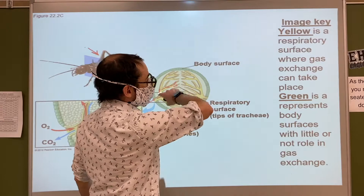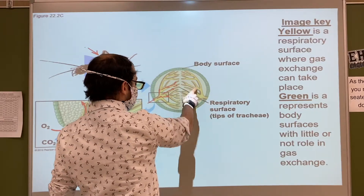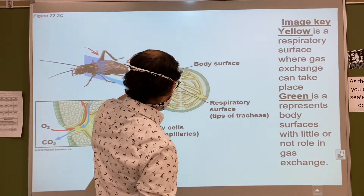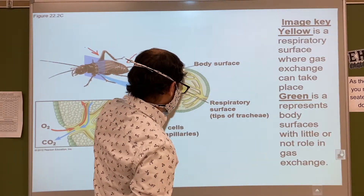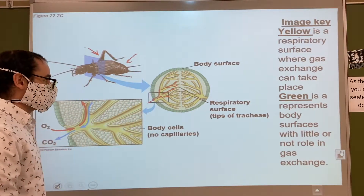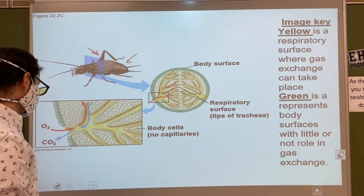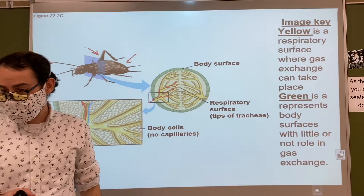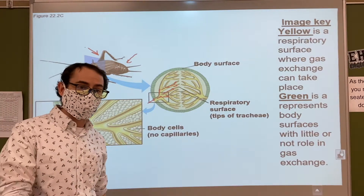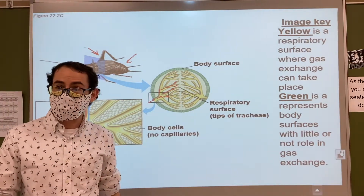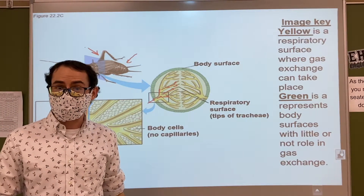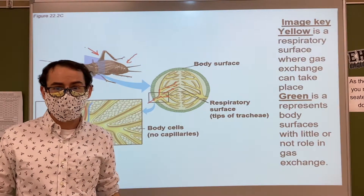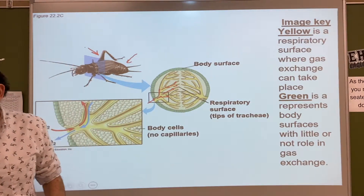So the yellow is the respiratory surface, and the green represents the exoskeleton where there's not much gas exchange happening. They're not going to have blood in the same way that we think of blood for us. Any insect or arthropod breathing questions?